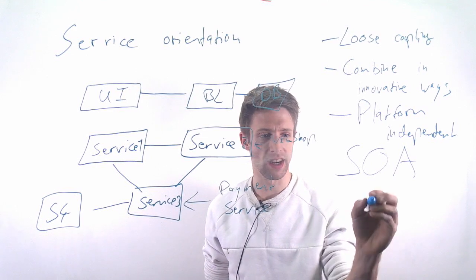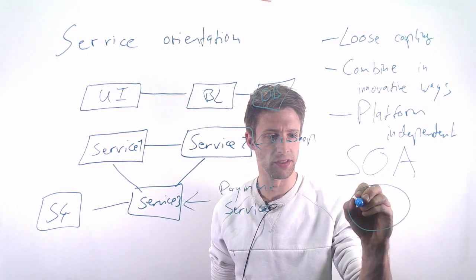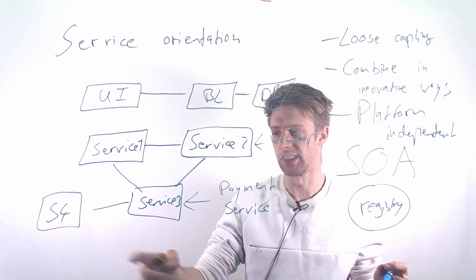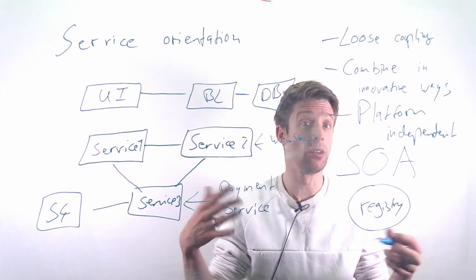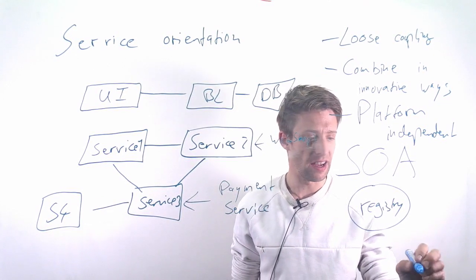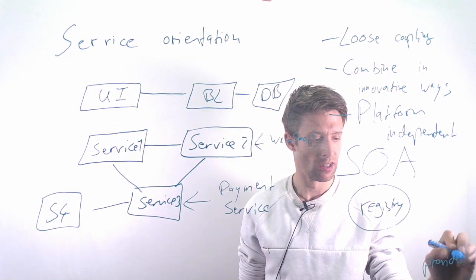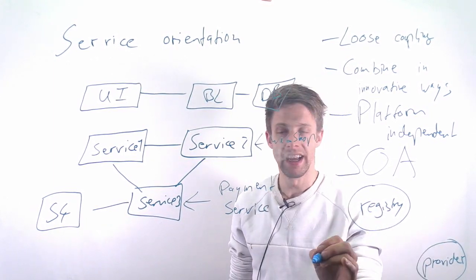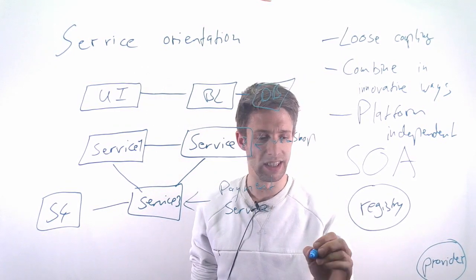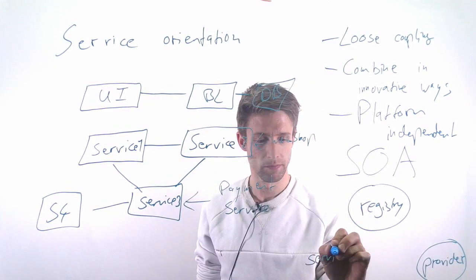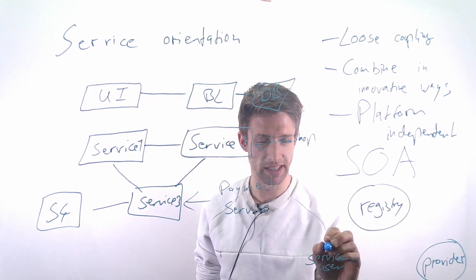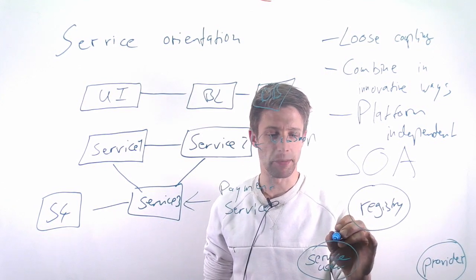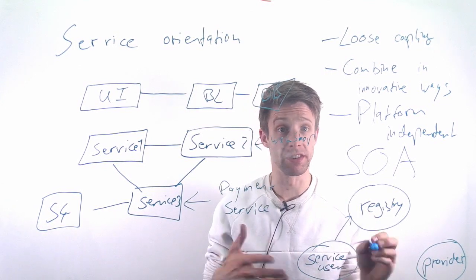What you have in this style is a service registry, some place where you can register your services and say, 'Hey, I am having a payment service here, you can use it if you want.' You have the service provider, the company or the individual that actually implements and runs the service. And you have the service user—the application that actually wants to use it. That application could then check with the registry what kind of services are offered.